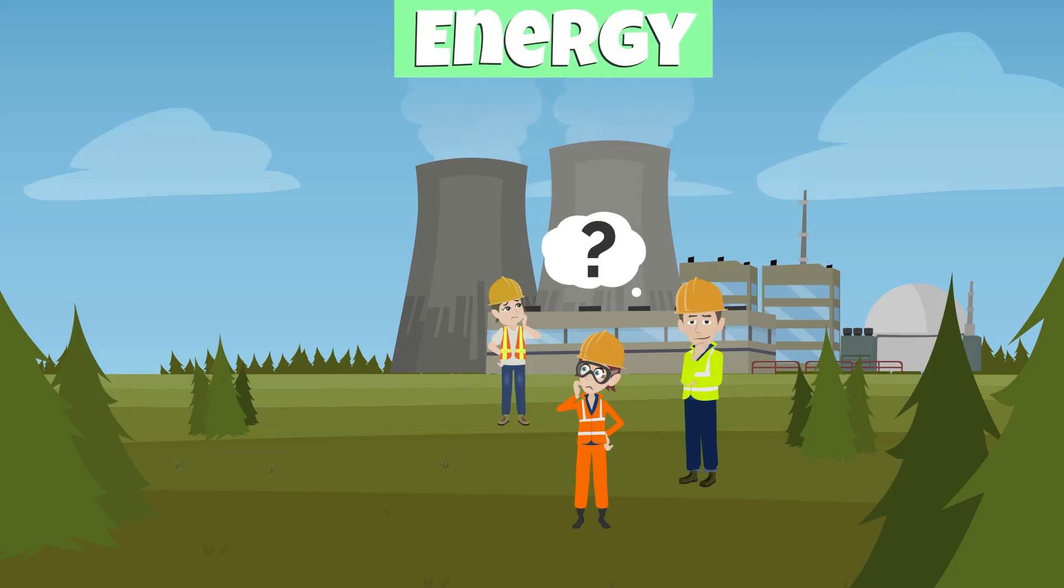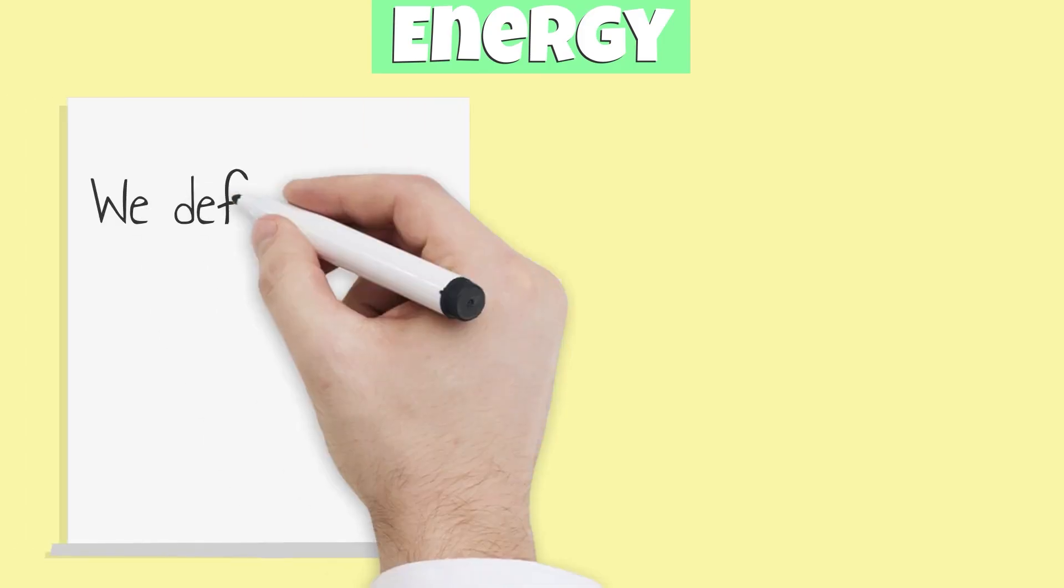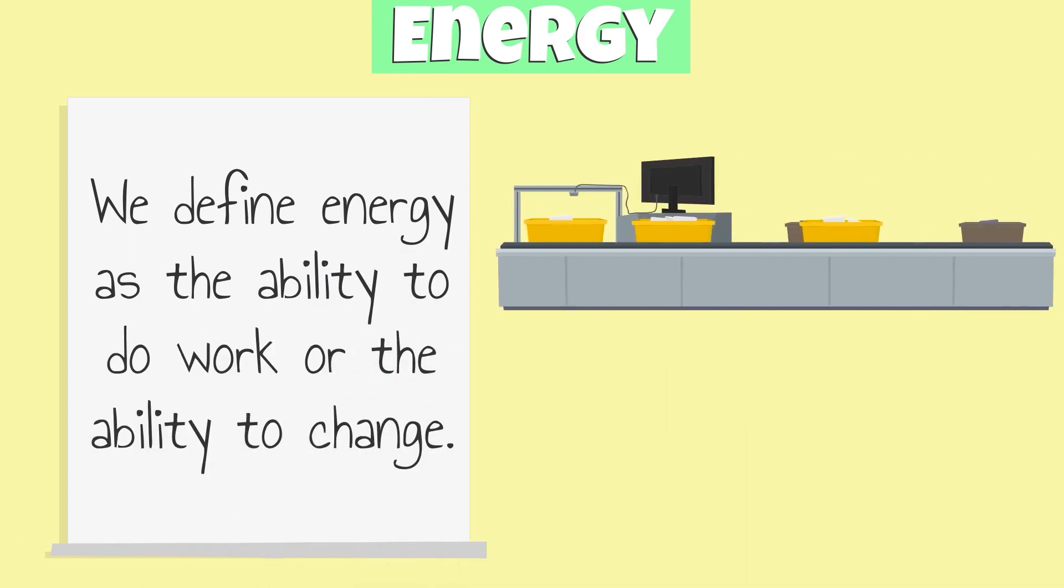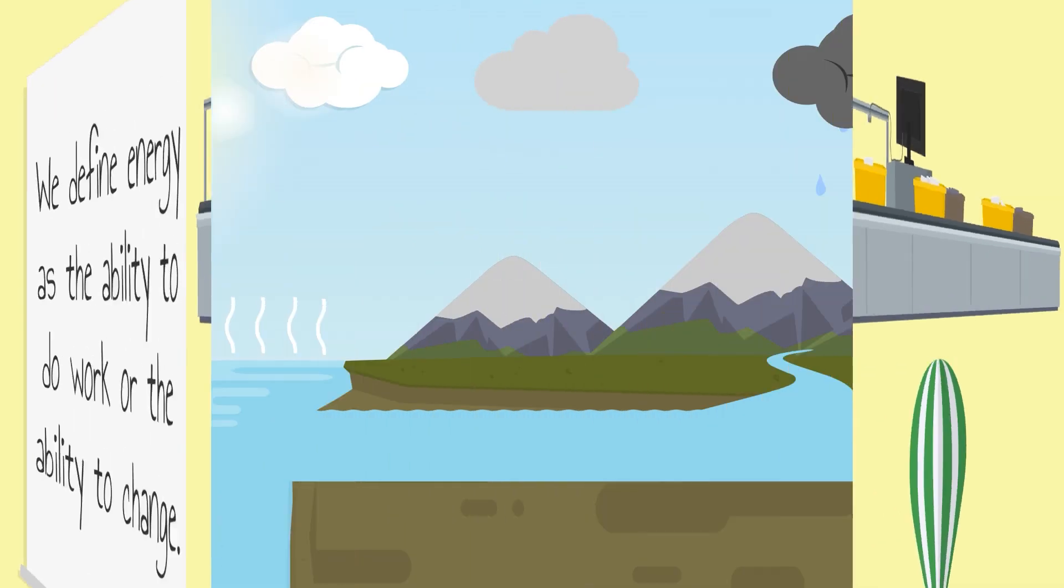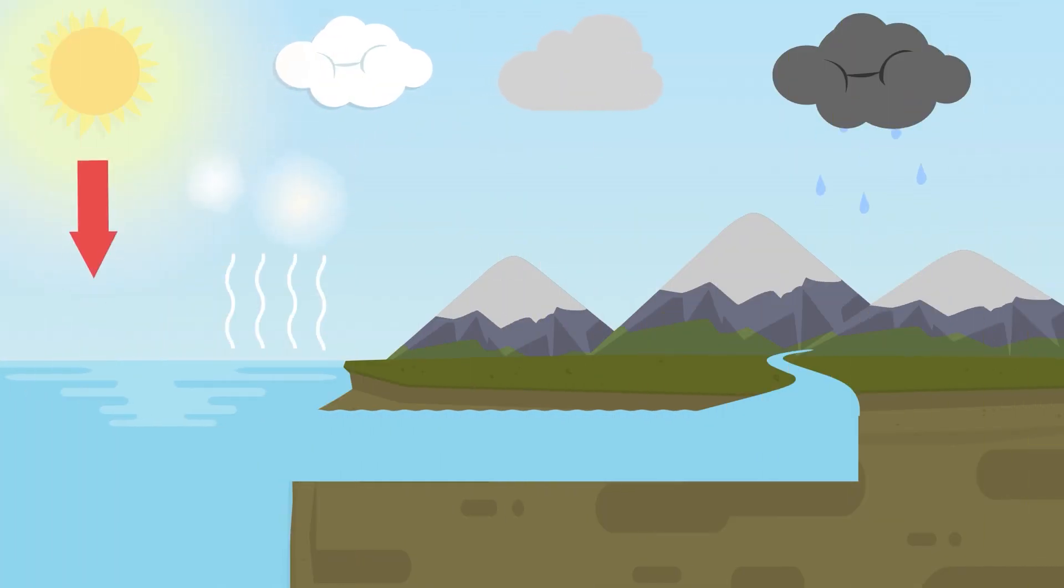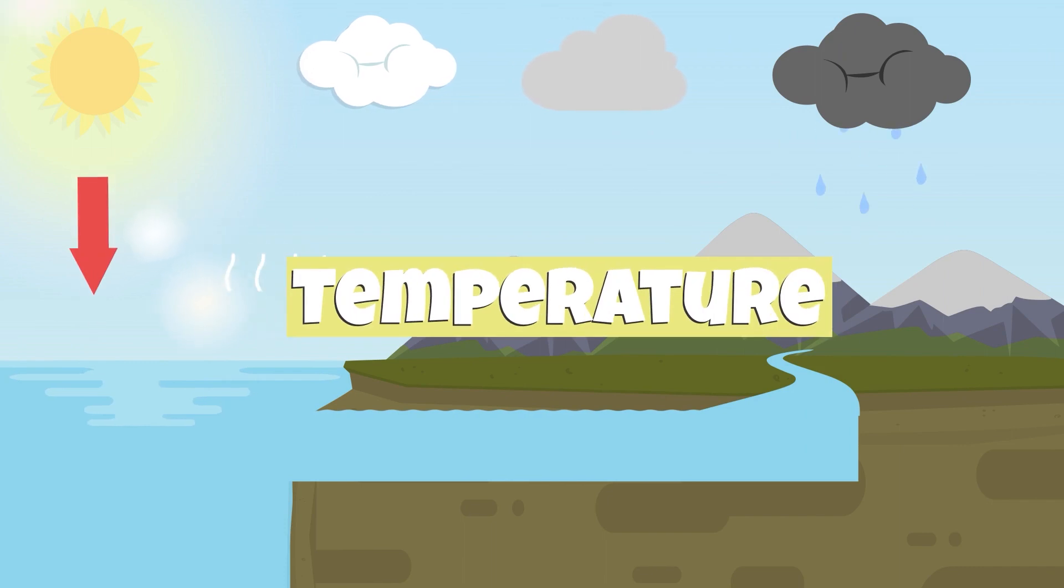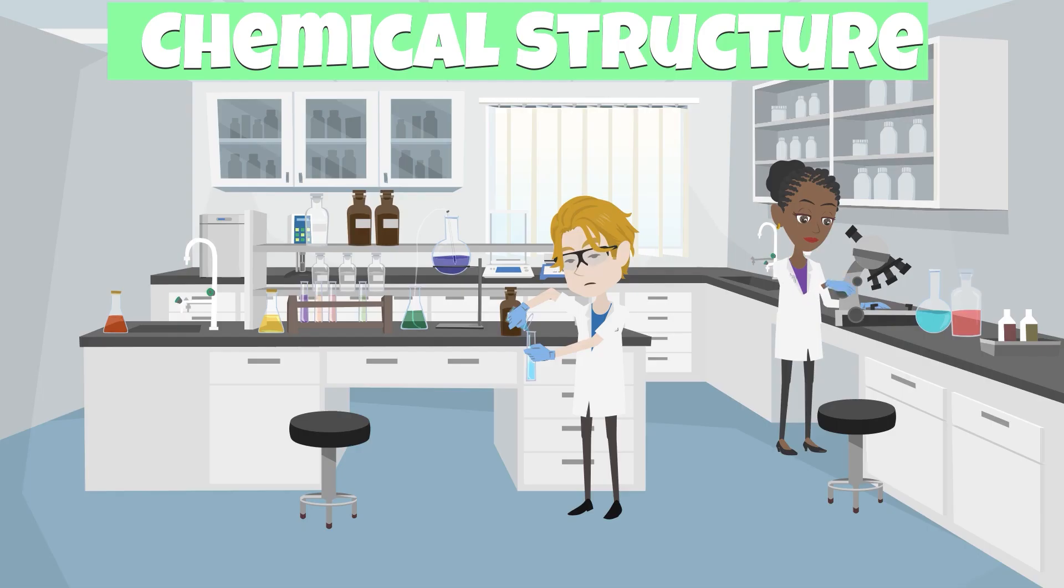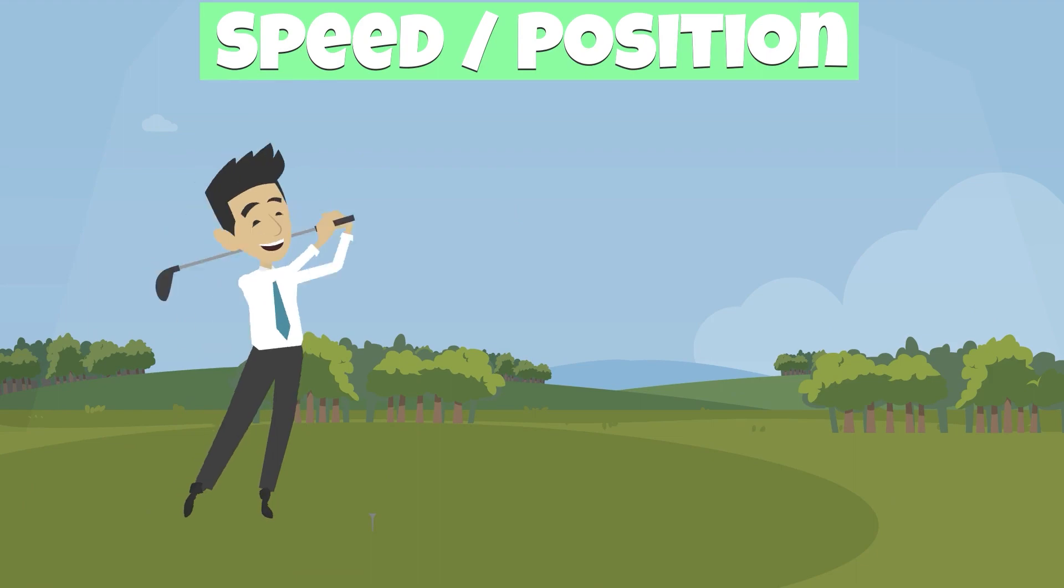So what is energy? We define energy as the ability to do work or the ability to change. Change in energy can take place in various forms. For example, when energy is applied to a system, there can be changes in temperature, chemical structure, or the speed or position of an object.